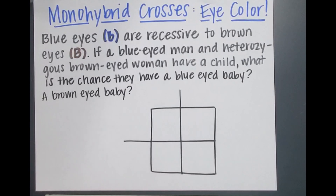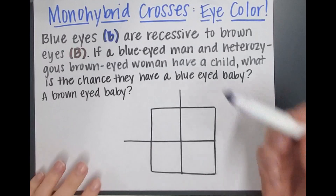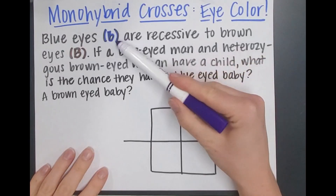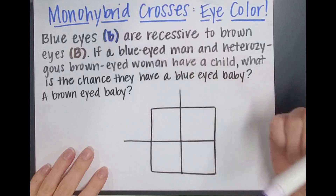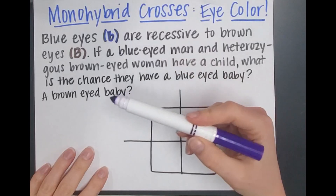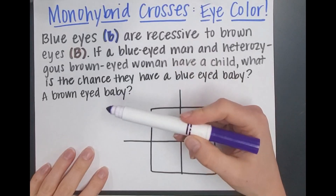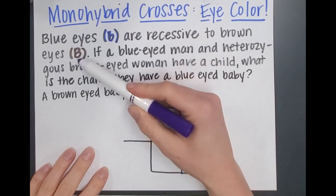It's pretty typical, and it's eye color. So if we have the idea that blue eyes are recessive to brown eyes, we can label them like this. We can give blue eyes the recessive little b, and brown eyes, which is dominant, a big B.